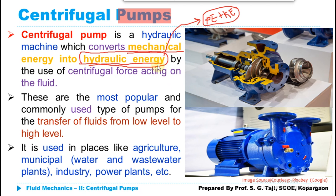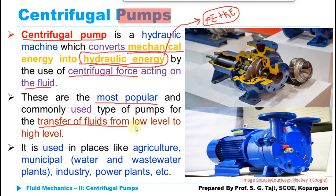If centrifugal force acting on the fluid is used for the conversion of mechanical energy into hydraulic energy, then that device is known as a centrifugal pump. You might have already seen centrifugal pumps at many locations — at households where they are used to take water from an underground tank to an overhead tank, or at water supply treatment plants where water is taken from the treatment plant to the distribution reservoir. They are the most commonly used type of pump for transferring fluid from a lower level to a higher level.